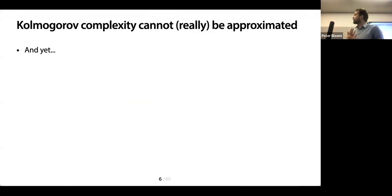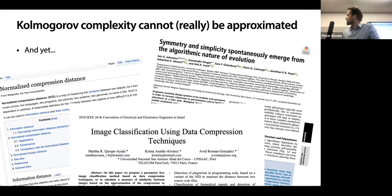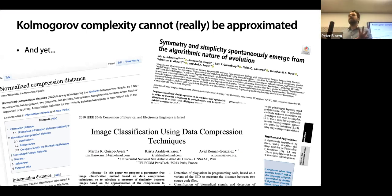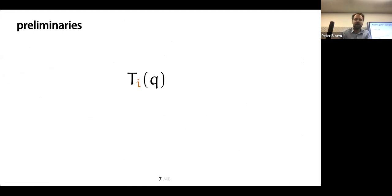Let's talk about approximating Kolmogorov complexity. The motivation is very simple: Kolmogorov complexity cannot really be approximated — there are a lot of no-goes about approximating it. And yet we do it all the time, usually by figuring everything out with Kolmogorov complexity and nice formulas and then removing the Kolmogorov complexity and plugging in Lempel-Ziv or some other compressor. And it does work. So something's going on. Where is this gap? How can we explain this theoretically and make it more precise?